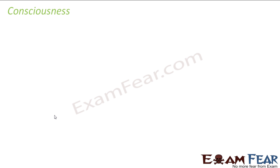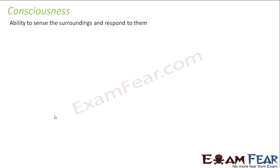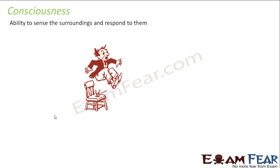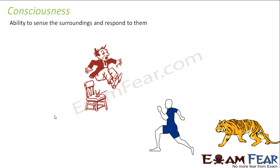For a non-living object like a bottle of water or a pen lying on the table, the pen doesn't bother about what is happening around it. But living organisms actually do bother about things happening around them and they react to them. The ability to sense the surroundings and respond to them is what we mean by consciousness. For example, when a person gets an electric shock they immediately jump away, or when someone sees a tiger coming towards them they start running immediately.